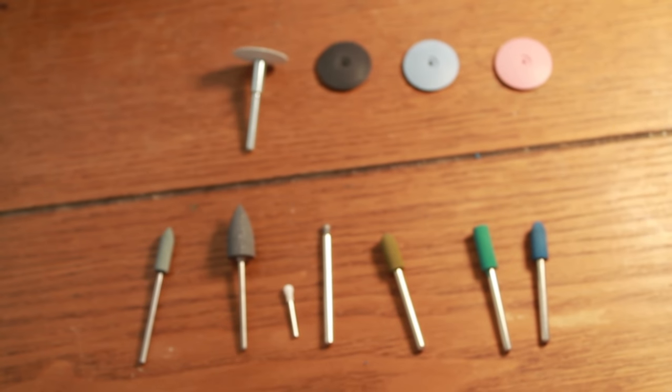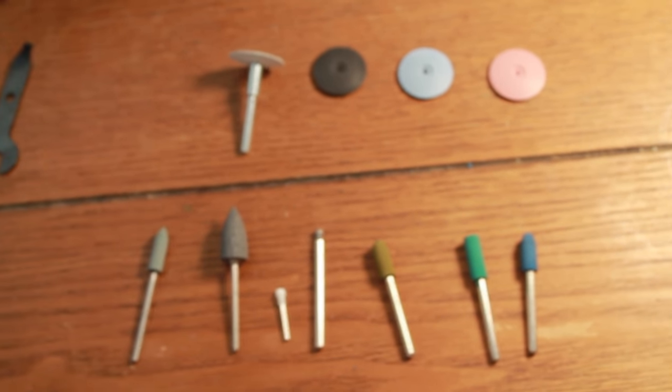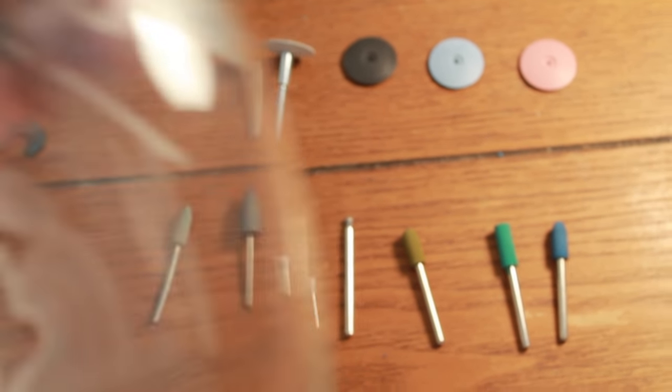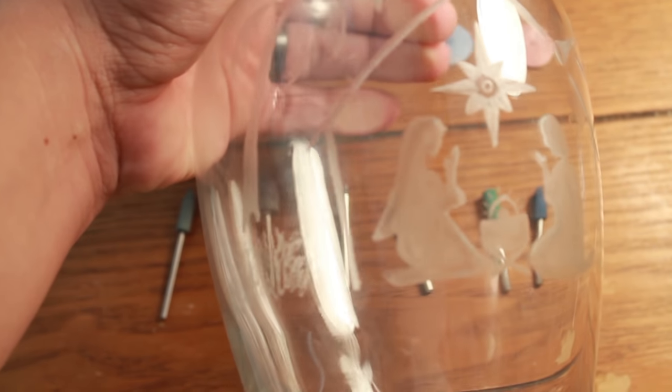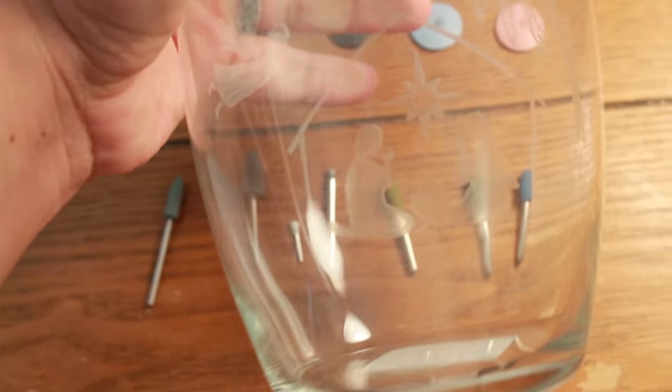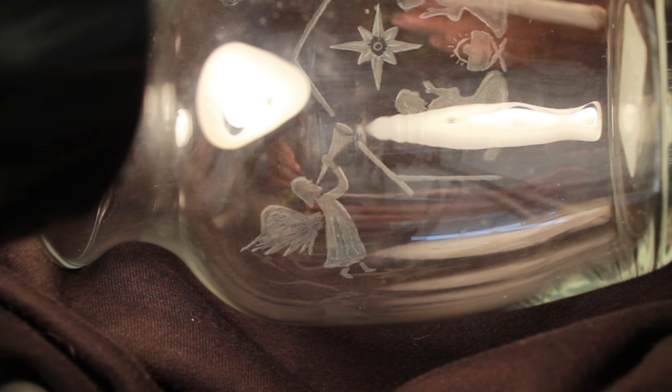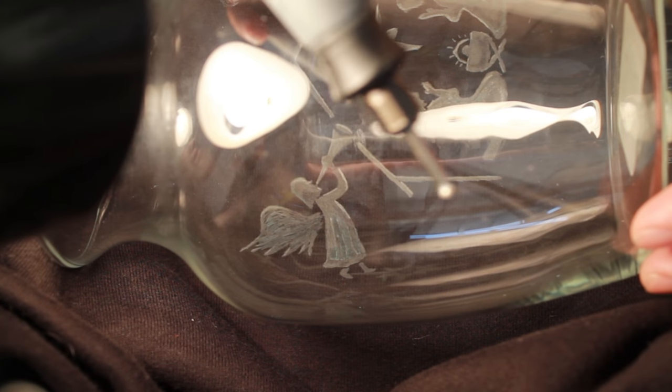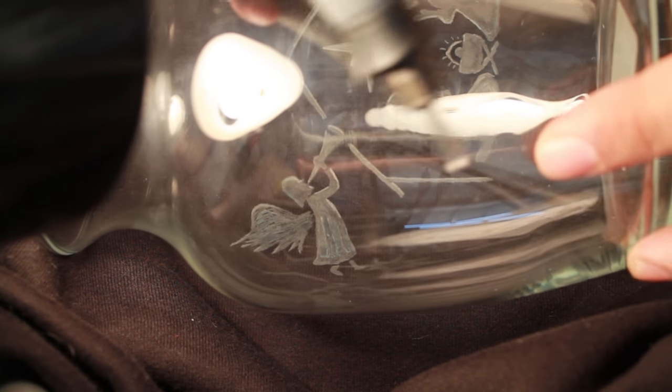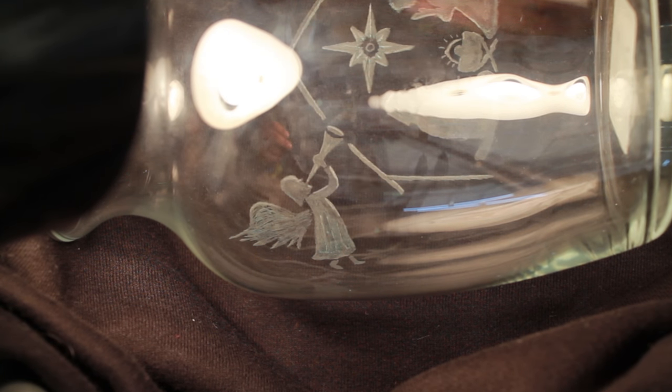Microns is the same as grit. It measures how coarse these are. The lower the microns, the finer it's going to be. Whereas if you're measuring in grit, it goes the opposite. The smaller the number of grit, the coarser it is. The higher the number of grit, the finer that is.